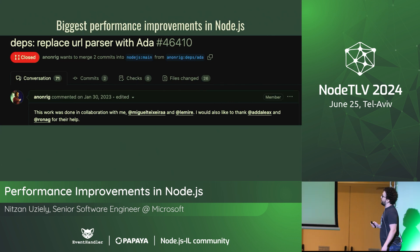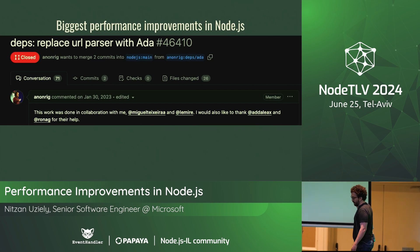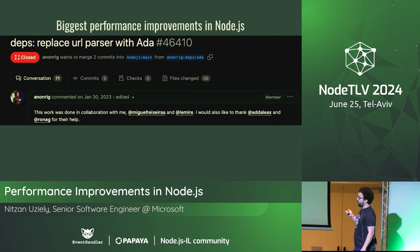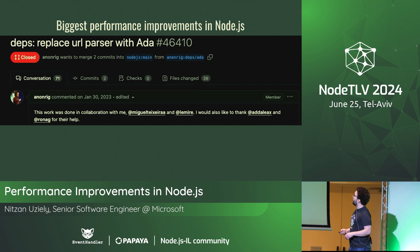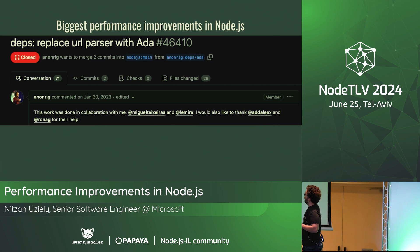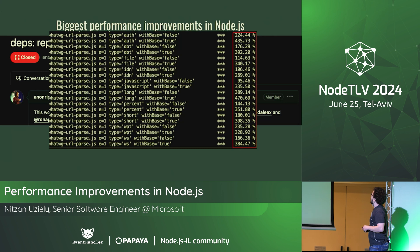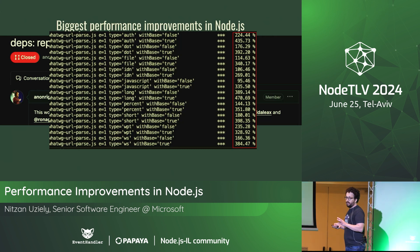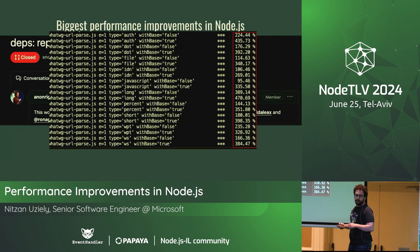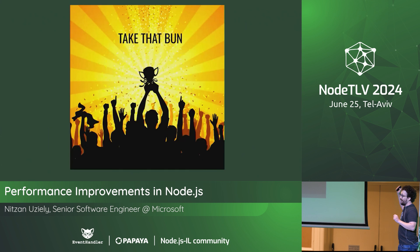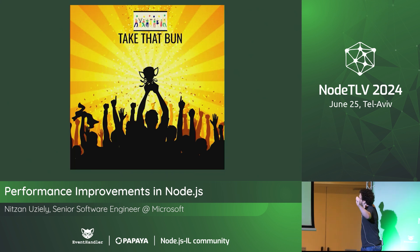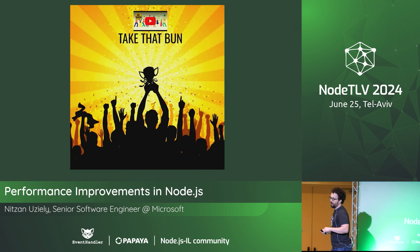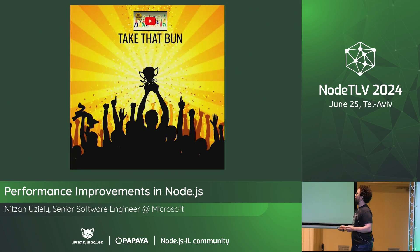Ada is a new URL parser by Yagiz Nizipli, Miguel Teixeira, and Daniel Lemire. It parses URLs, which is quite important for servers. They moved a lot of code to C++ from JavaScript and reduced data transfer between C++ and JavaScript. Benchmark numbers range from 95% to about 500% improvement. And the most important benchmark: it's 82% faster than Bun.